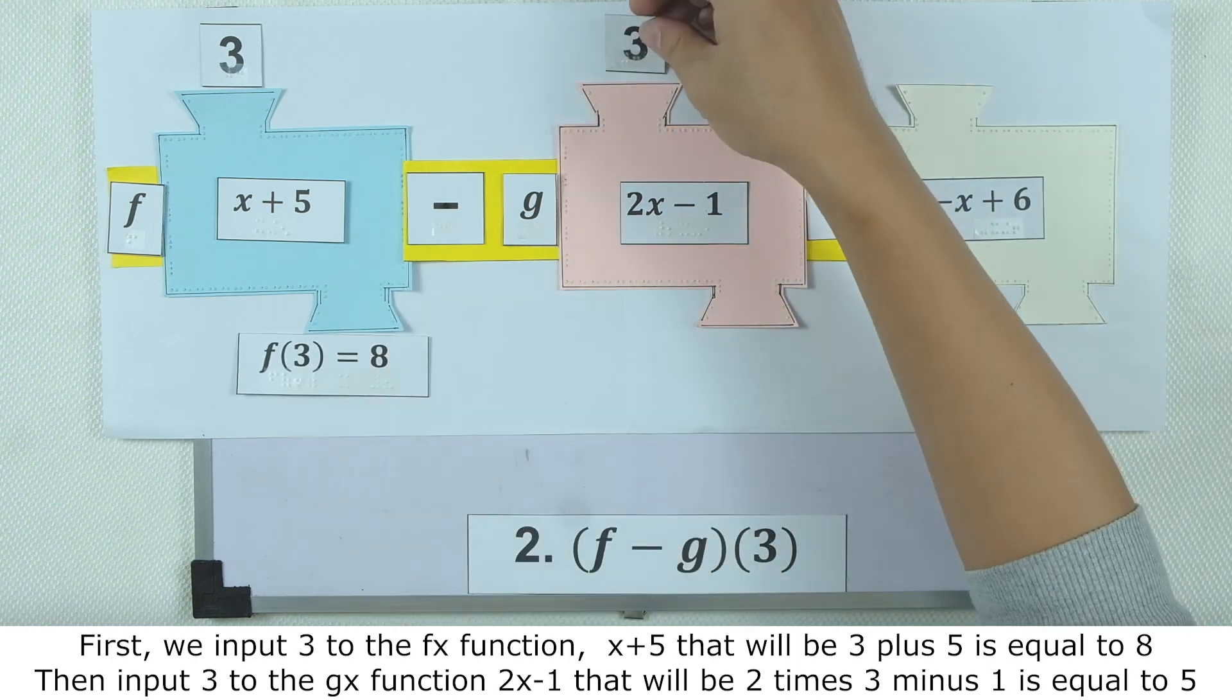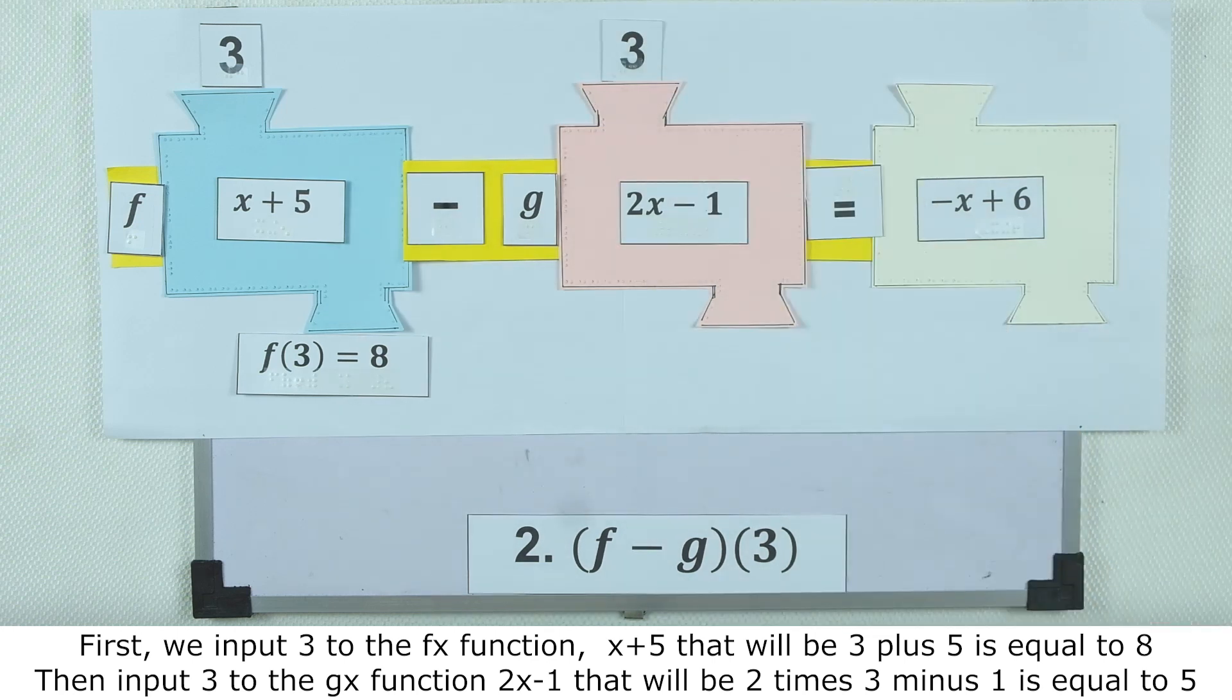Then, we need to input 3 in our g of x function. That will be 2 times 3 minus 1, which equals 5.